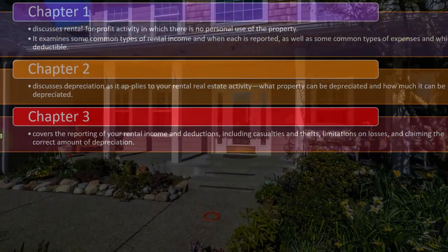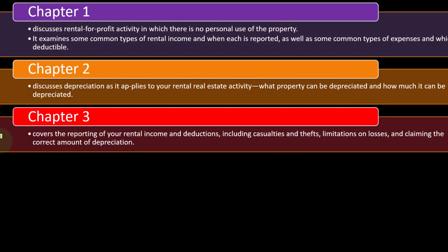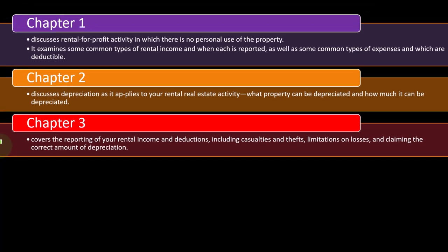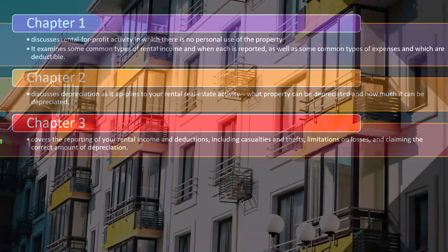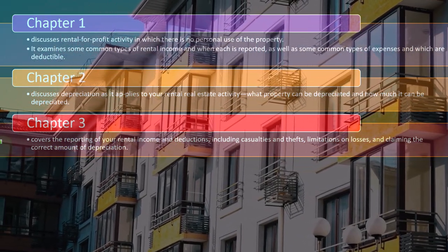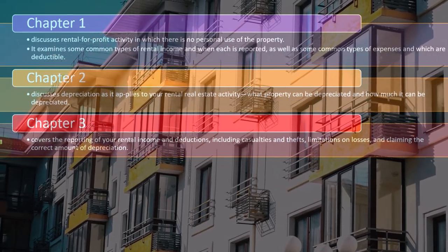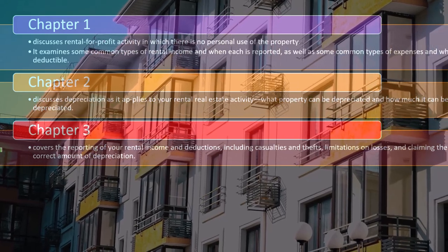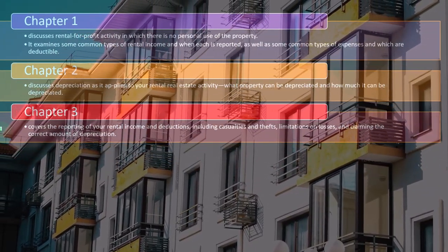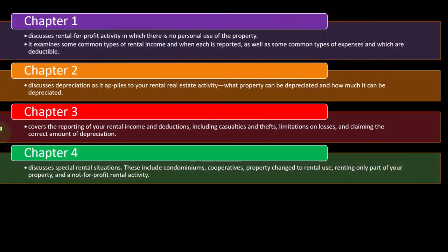With a Schedule C service business, a loss can typically be offset against other income. But with rental property, the long-term objective may be that the property accumulates value through appreciation, while the rental component generates revenue or possibly losses taken against other income — a different scenario, and another reason rental property is reported on Schedule E rather than Schedule C.